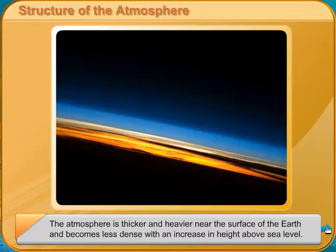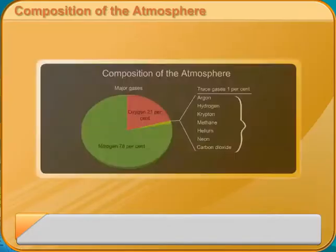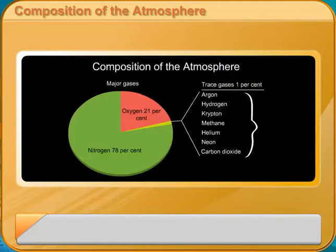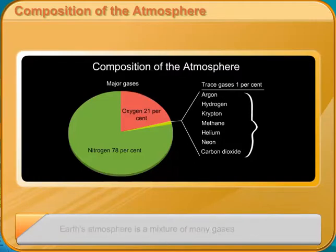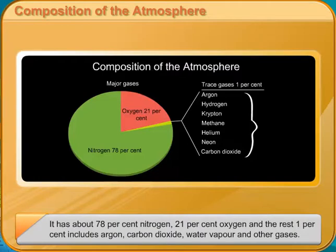Earth's atmosphere is a mixture of many gases. It has about 78% nitrogen, 21% oxygen, and the rest 1% includes argon, carbon dioxide, water vapour and other gases.